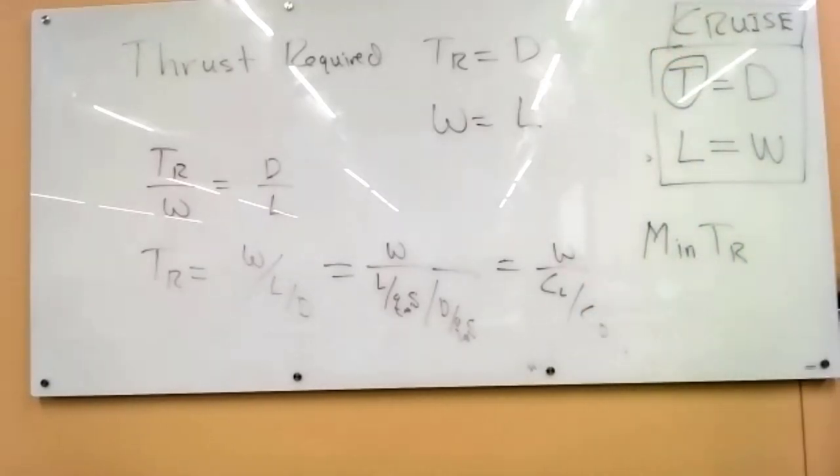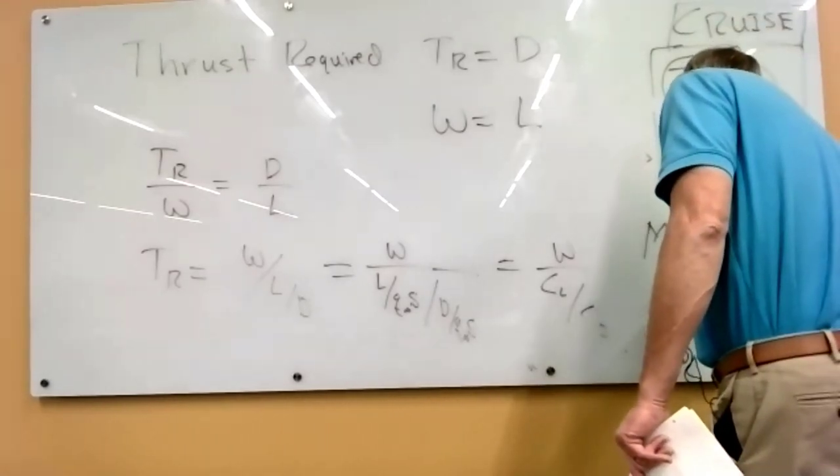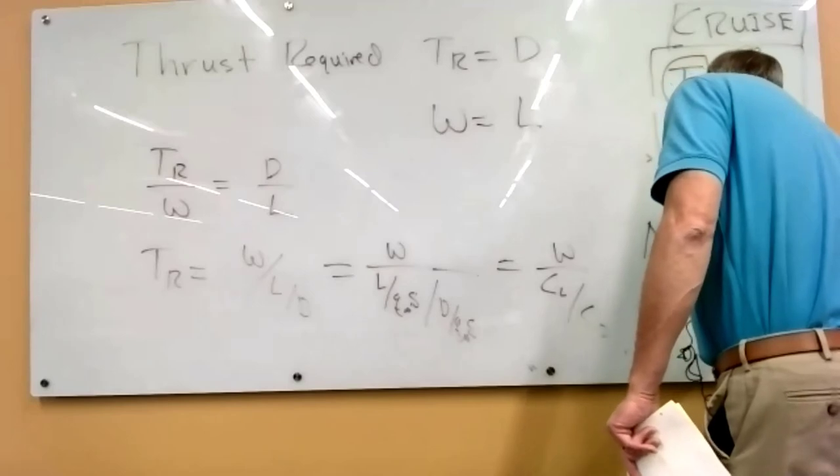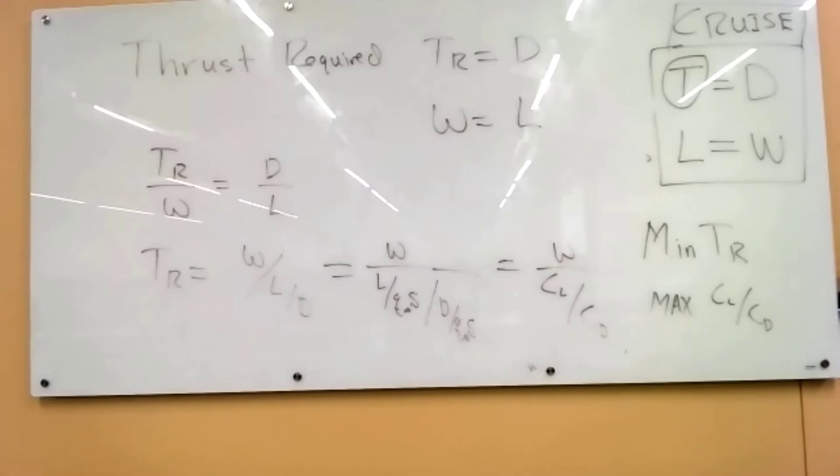And the reason I want to look at this is if we want to find the minimum required thrust, which is what we'd want to do, this occurs at max CL over CD. And if you remember for the airfoils, we calculated CL over CD and we found the maximum, and we said that was the efficiency of the airfoil. So it turns out, it makes sense that the most efficient lift to drag ratio is tied with the minimum thrust.